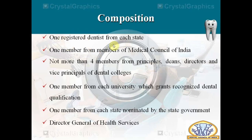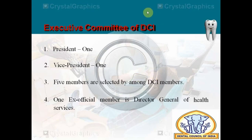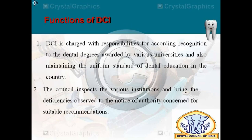In summary, the DCI composition is: 29 members (one from each state), one from the Medical Council of India, four from principals/deans/directors/vice-principals, one from each university, 29 state government nominees, one Director of General Health Services, and six Government of India nominees (four from Part A, two from Part B). The Executive Committee is the core decision-making body of the DCI. It has one President, one Vice President, five members selected from among the DCI members, and one ex-officio member who is the Director of General Health Services.